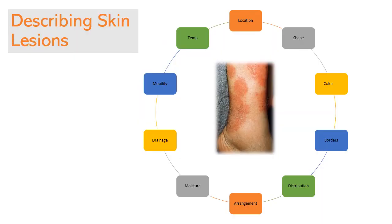Description of skin lesions includes the location, shape, color, border characteristics, distribution, arrangement, moisture status, any drainage, mobility — such as whether a nodule is fixed or mobile — and the temperature of the lesion. Be familiar with the terms used to clarify lesion properties so that you can document them accurately.